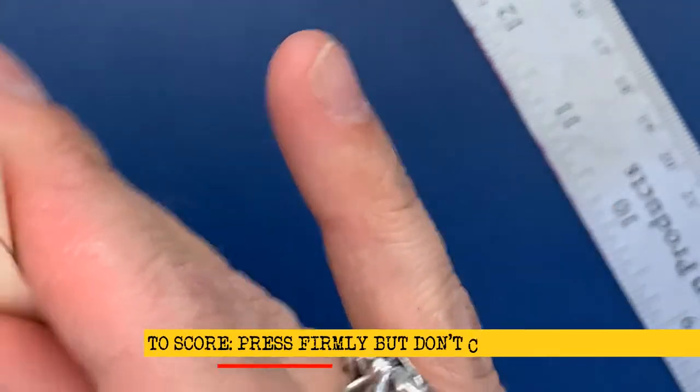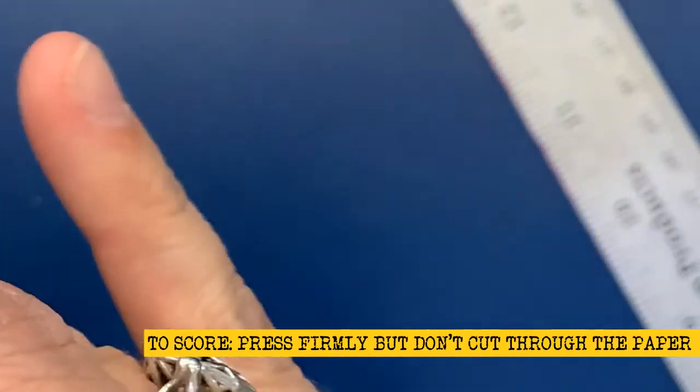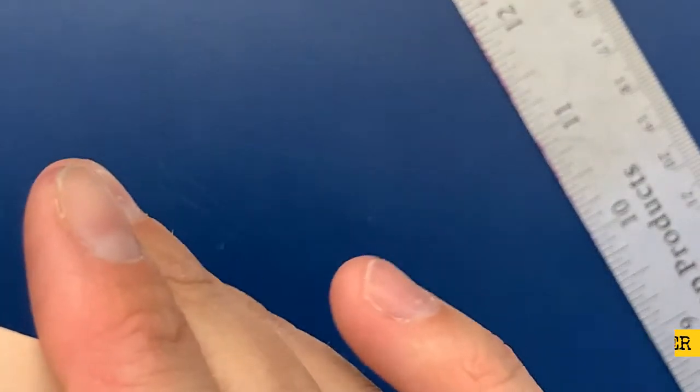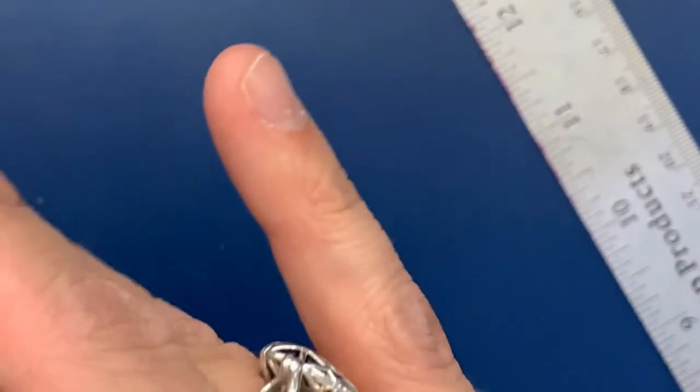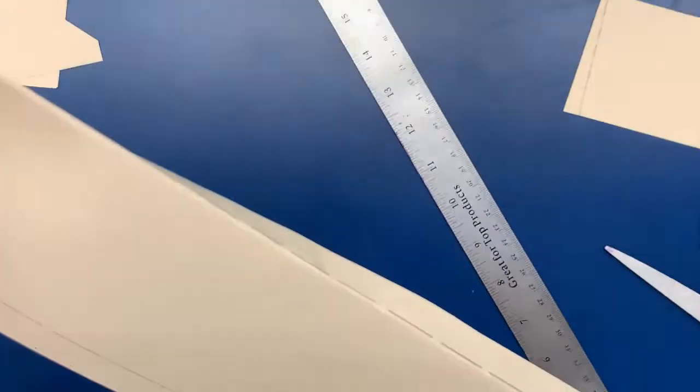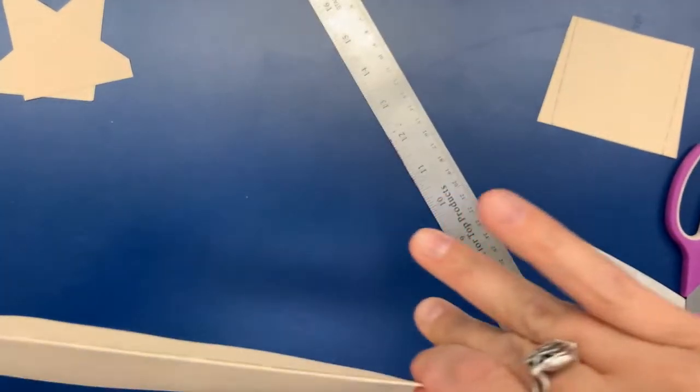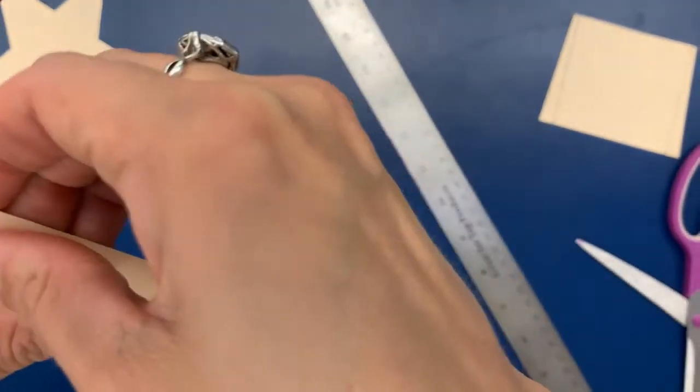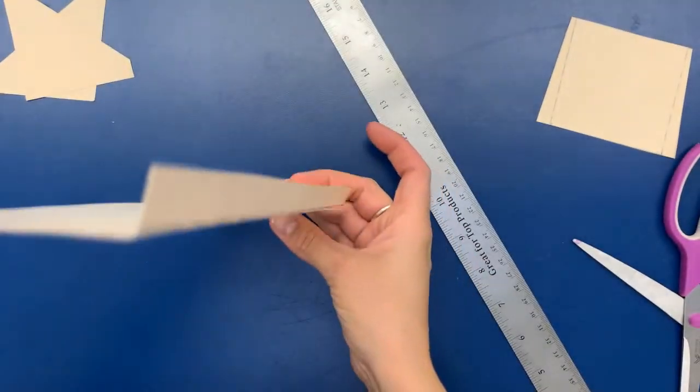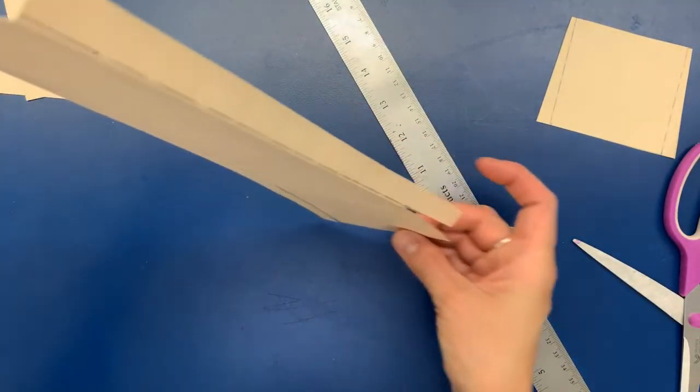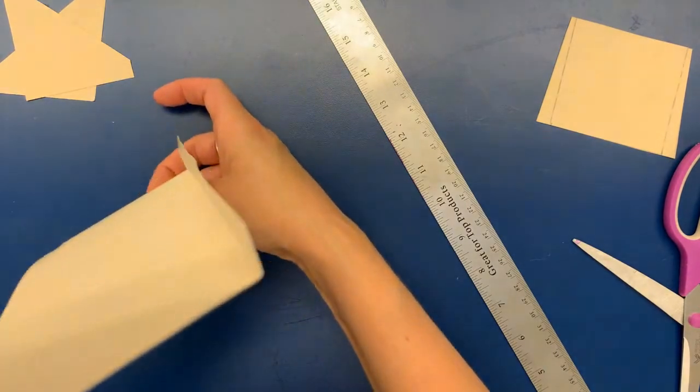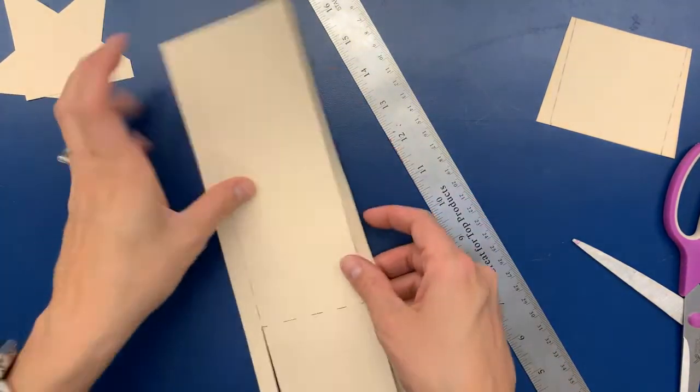I'm going to bend this along that line that I just got done pressing. If you did a good job scoring, it shouldn't be too hard, but at the same time, you don't want to cut through the paper. Let me zoom back out so you can see the finished project just a little bit. It's a nice, even fold. I'm going to do that with each of the different sides.